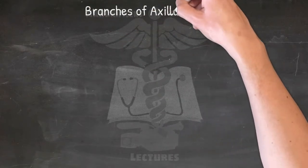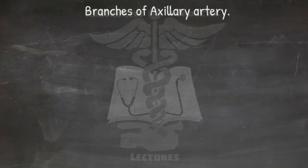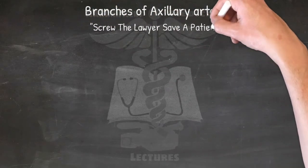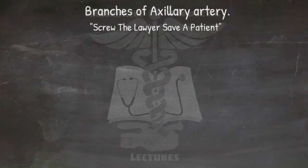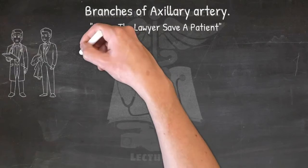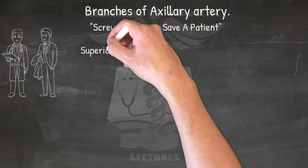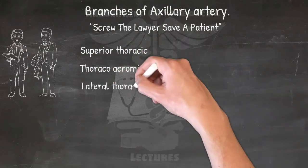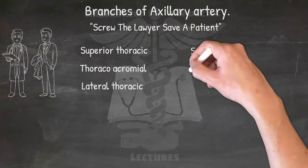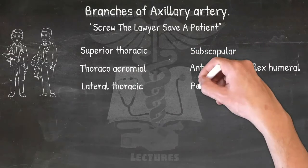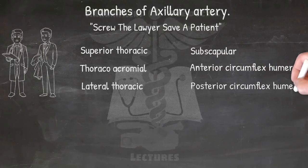For the branches of the axillary artery, use: 'Screw the lawyer, save a patient.' The branches are: superior thoracic, thoracoacromial, lateral thoracic, subscapular, anterior circumflex humeral, and posterior circumflex humeral.